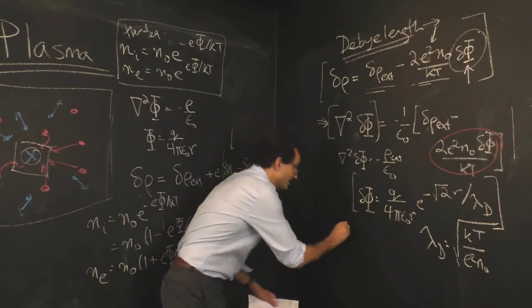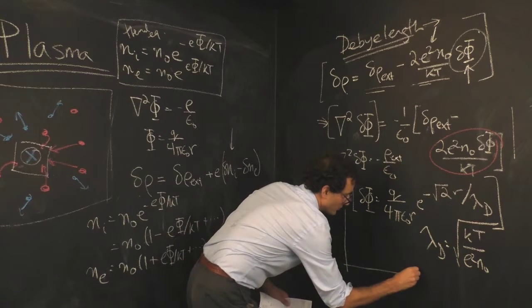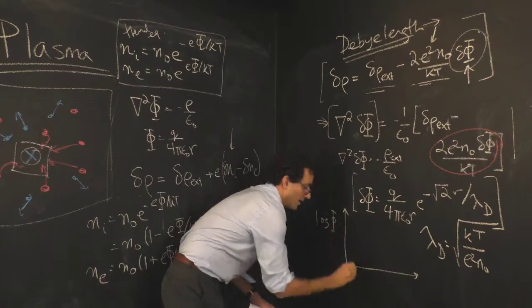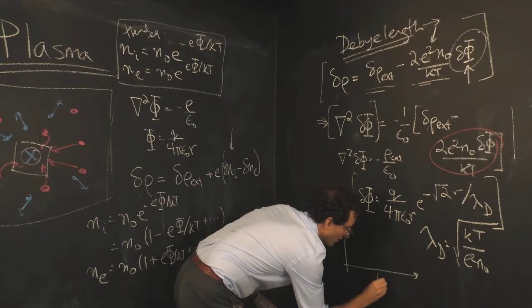One way to think of it is just to draw the standard potential. I'm going to draw on this axis log phi, and on this axis log r.